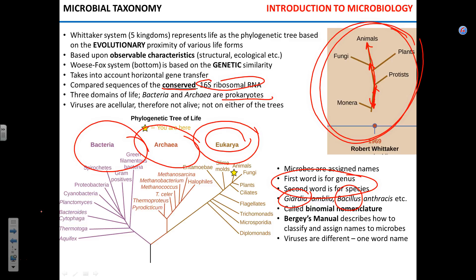A lot of biologists now suggest we should stop using the word 'prokaryotes' because it groups together two entirely different domains. But it's convenient for describing cell structure, since bacteria and archaea are both prokaryotic and lack membrane-bound organelles. Looking at the tree, the common ancestor initially split into bacteria and a common ancestor for archaea and eukarya — so archaea and eukaryotes are actually closer to each other than bacteria and eukaryotes. Those methanogenic archaea from Yellowstone hot springs are genetically closer to humans than Staph. epidermidis on our skin.